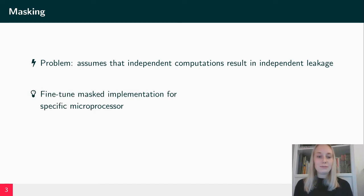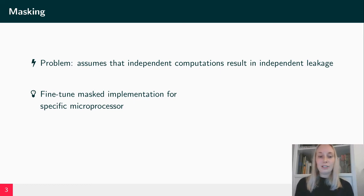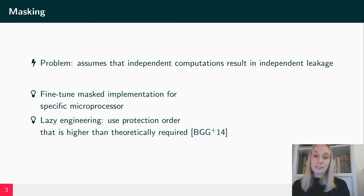How can we fix this? First, we can adapt our masked software to the microprocessor itself if we know enough about our microarchitecture and its leakage behavior — then we can fine-tune our software so that leakage will not occur during execution. Second, we can also apply a lazy engineering approach: if we do not know that much about our microarchitecture, we can use a protection order higher than theoretically required, accepting a certain loss of protection orders and applying a masking scheme with higher order than actually required.